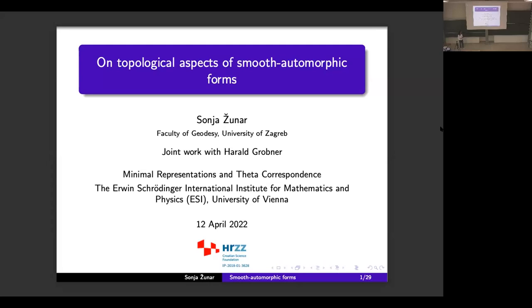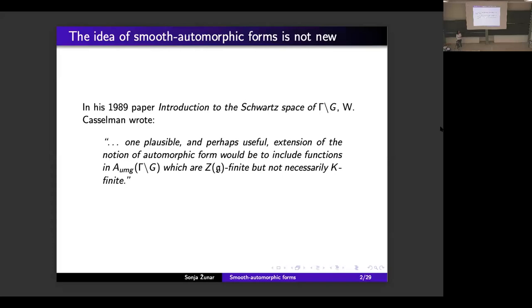The idea of replacing the classical automorphic forms by the so-called smooth automorphic forms — i.e., not necessarily K-infinity finite automorphic forms — is not new and is well known to the experts. For example, in his 1989 paper, Casselman, motivated by the then newly developed theory of Casselman-Wallach completions, remarked that one plausible and perhaps useful extension of the notion of automorphic form would be to include left-Gamma-invariant complex smooth functions on the group G of uniform moderate growth, which are Z(g)-finite but not necessarily K-finite.